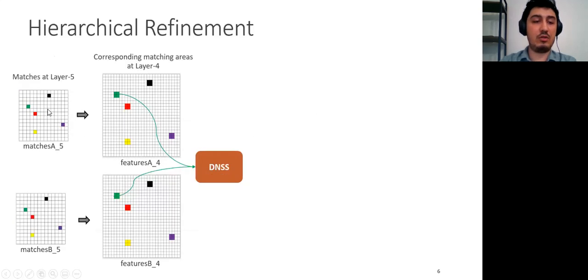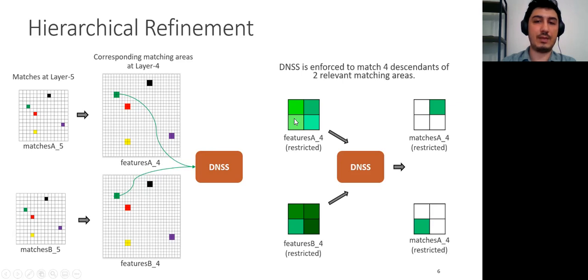These initial matches correspond to matching areas in the previous layers. On the left, you can see matches at layer 5, and on the right, you can see corresponding matching areas at layer 4. For VGG-19, matching areas are 2-by-2 regions. Then we feed DNSS independently with feature vectors inside these matching areas. By doing so, we restrict the search area and avoid looking for matches at irrelevant locations. Therefore, DNSS is enforced to match descendants of two relevant matching areas. We apply this procedure to each matching area. This kind of approach provides some beautiful properties.